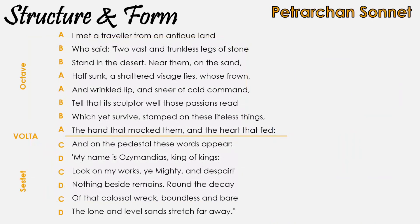A Petrarchan sonnet consists of an octave, which is an eight-line section, and then a sestet, which is a six-line section. These are divided by the Volta — the turning point in a poem, which can be found in poems other than sonnets too. The rhyme scheme is A-B-B-A, A-B-B-A for the octave, followed by either C-D-C-D-C-D or C-D-E-C-D-E for the sestet, depending on the poet.